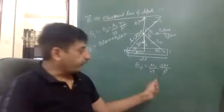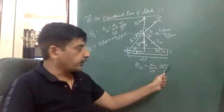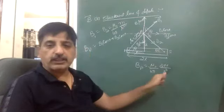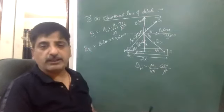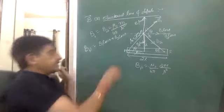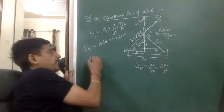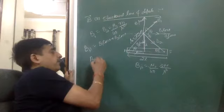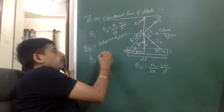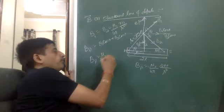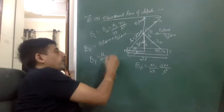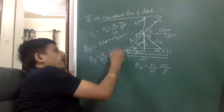The formula becomes 2M on the axial side, then M alone on the equatorial side. The resultant magnetic field value on the equatorial line is mu naught by 4 pi, M by R cubed.